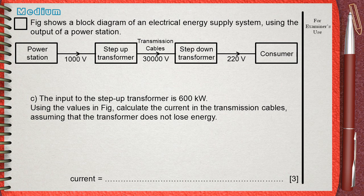Question C. The input to the step-up transformer is 600 kilowatts. Using the values in figure, calculate the current in the transmission cables, assuming that the transformer does not lose energy.